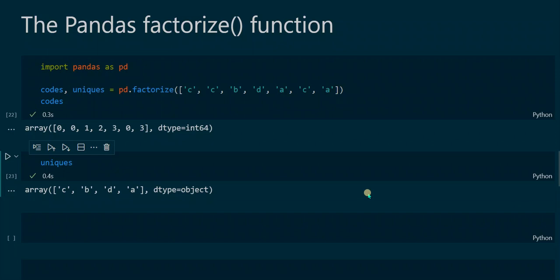For example, the character c is the first value in the original list and it is assigned the numeric value zero, because a computer program starts counting at zero. So c gets assigned zero, and b is the next unique value from left to right, so b is assigned the value one.